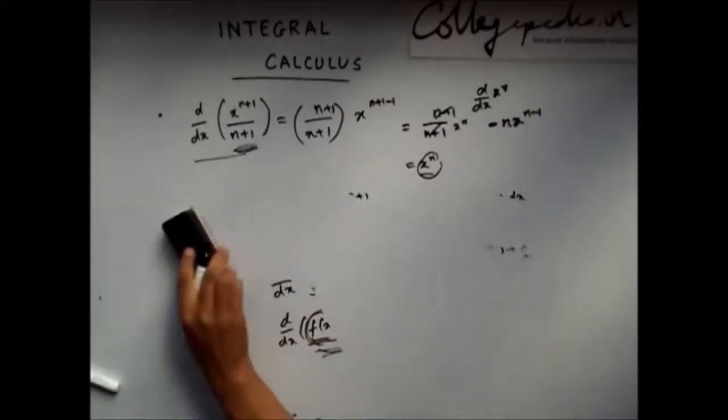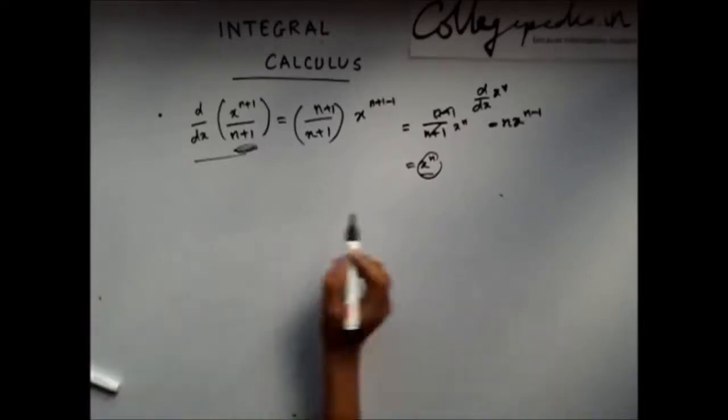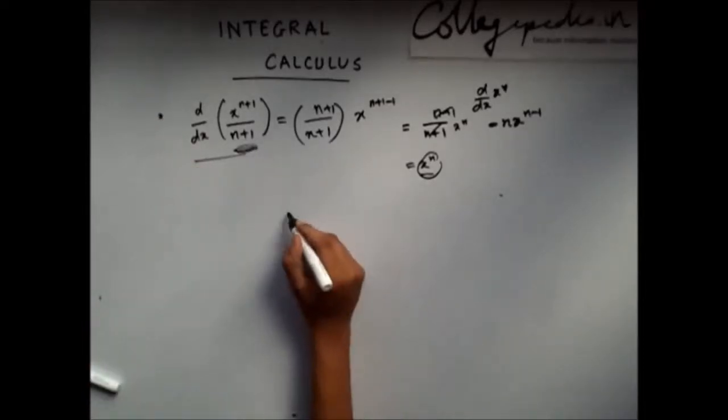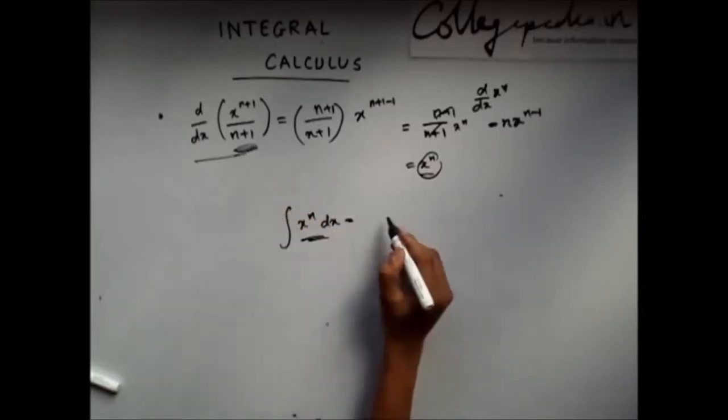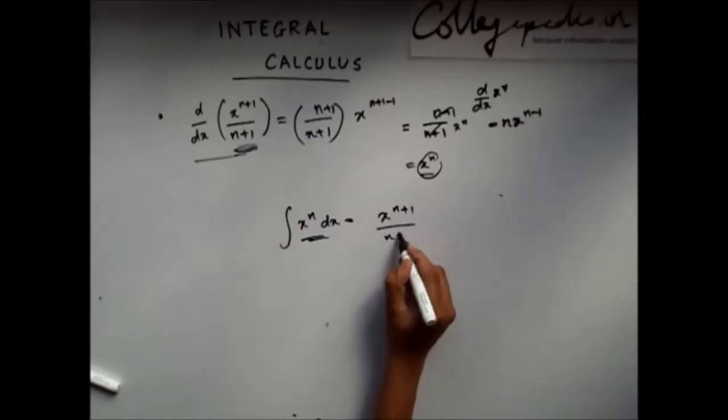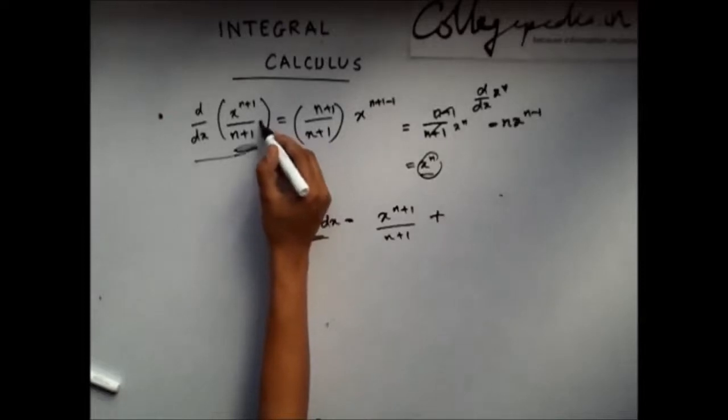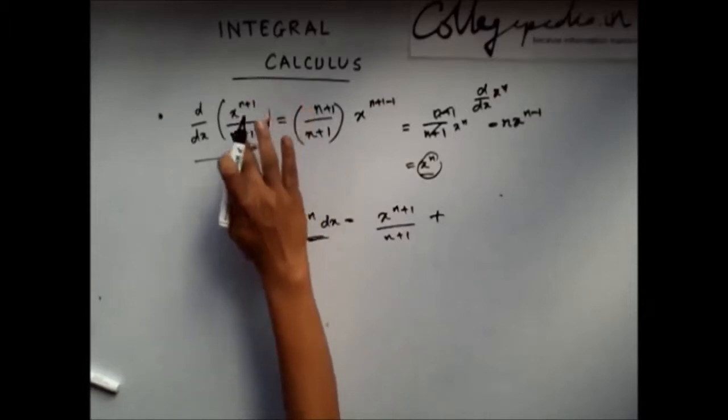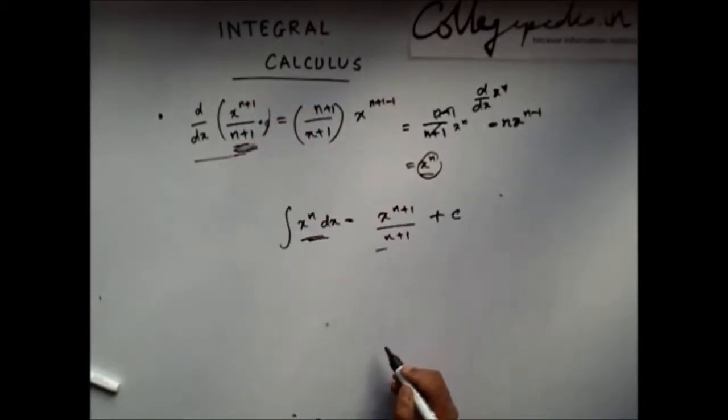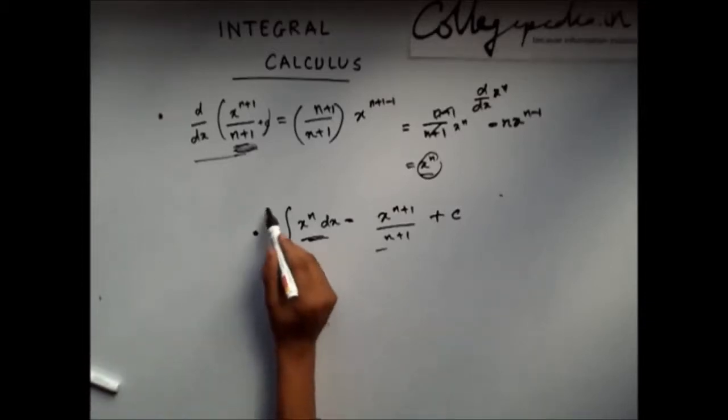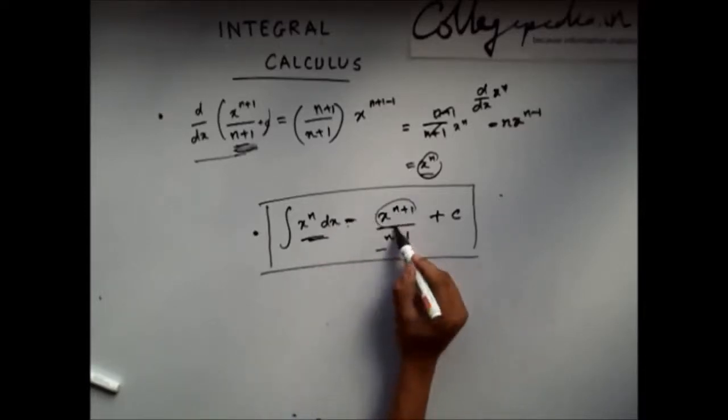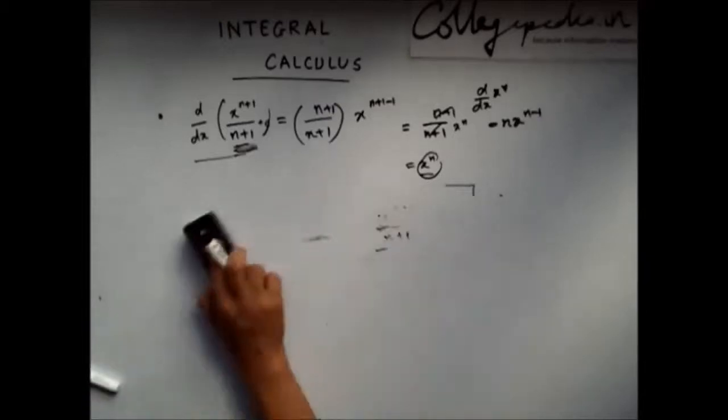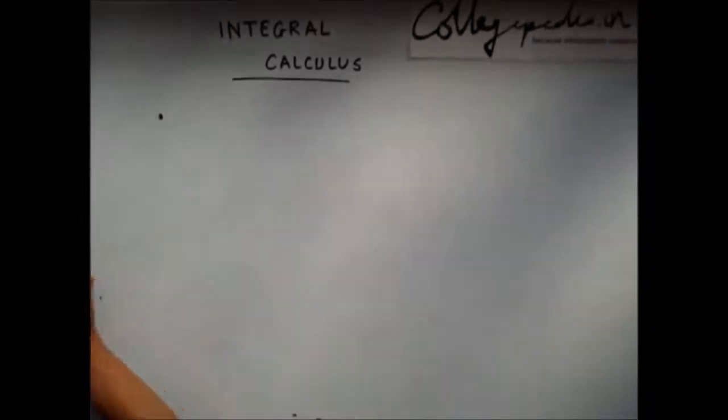So now, in this case, if I integrate x^n, I should get this value. And now we are not sure whether it was x^(n+1)/(n+1) + c or it was just x^(n+1)/(n+1). So I will write a constant c here. This is my first formula of integration which I should remember. Integration of x^n dx is x^(n+1)/(n+1) plus some constant c.